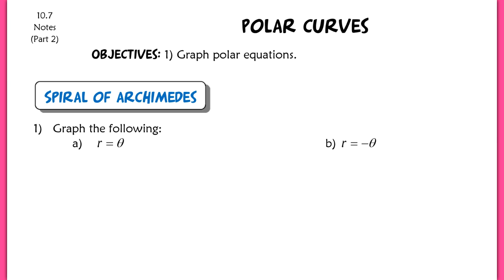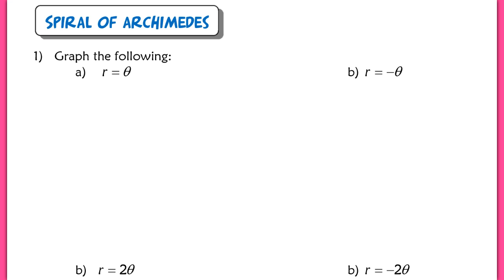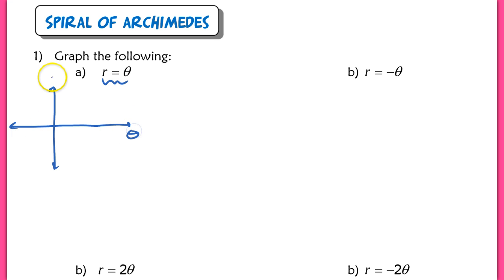The first one is going to be the Spiral of Archimedes. Let's start with graphing r equals theta. We learned in our previous lesson that whenever you want to graph a polar equation, it's best to set up a graph of a rectangular equation first — you treat this as if it were a rectangular equation and create a reference graph. If we have our theta and r-axis, this graph is just like y equals x — a linear function through the pole.